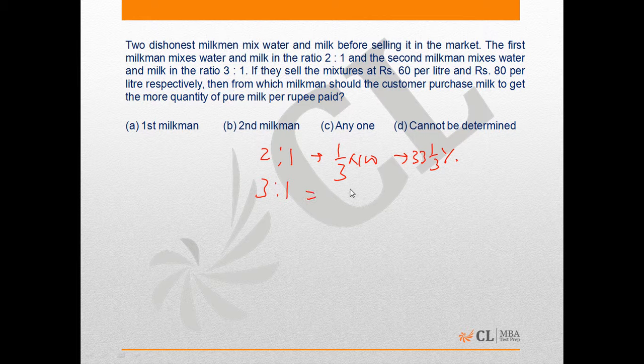Which means the percentage of milk in the mixture of second milkman is 1 by 4 into 100, which is 25 percent. If they sell the mixture at 60 and 80 rupees per liter respectively, then from which milkman should the customer purchase milk to get the more quantity of pure milk per rupee paid?